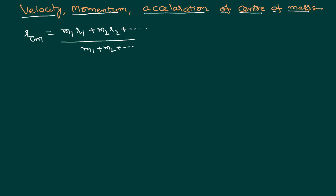If it is a one-dimensional system, in the place of R1 we write only X1. If it is a two-dimensional system, in place of R1 there will be an X component as well as a Y component. If it is three-dimensional, then in place of R there will be an X component, Y component, as well as a Z component. So this is the general formula for the position of the center of mass.